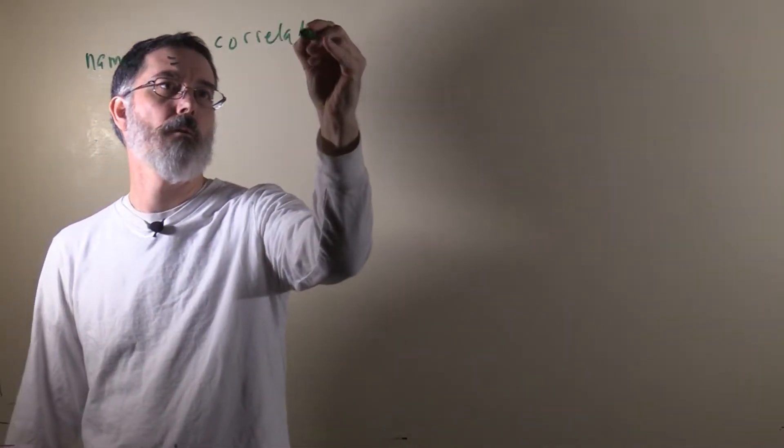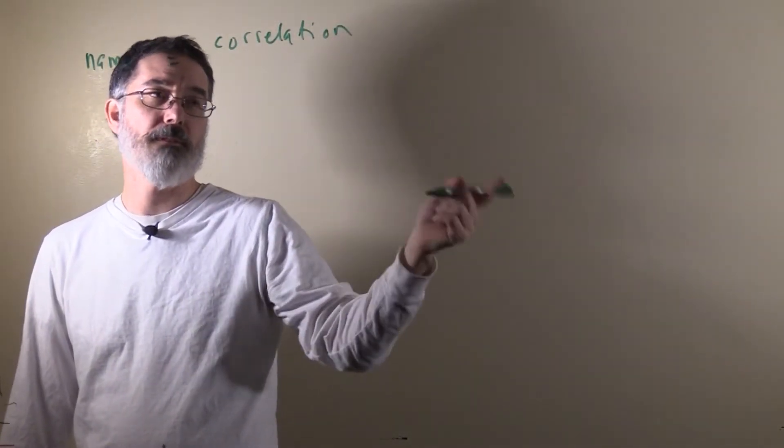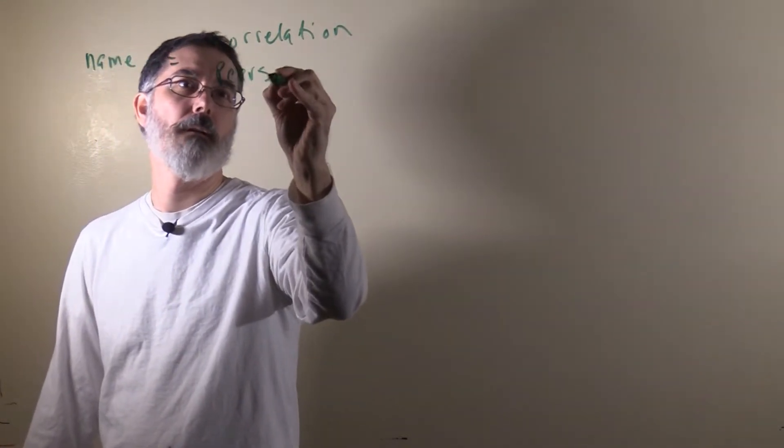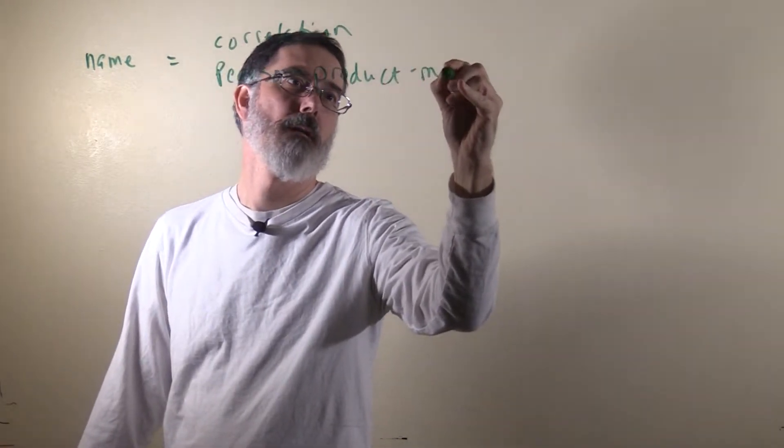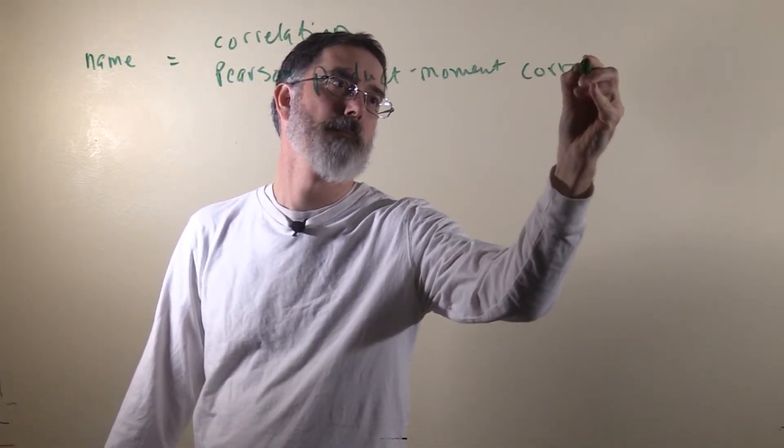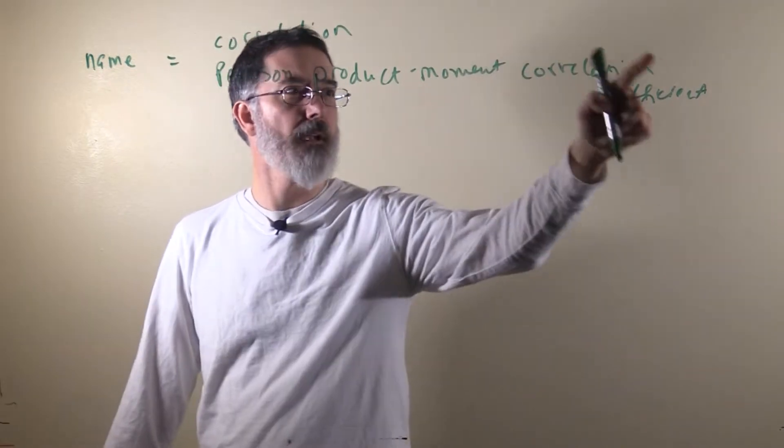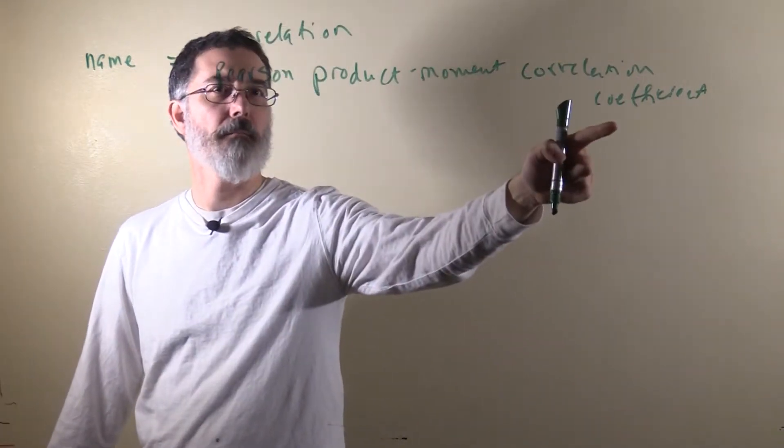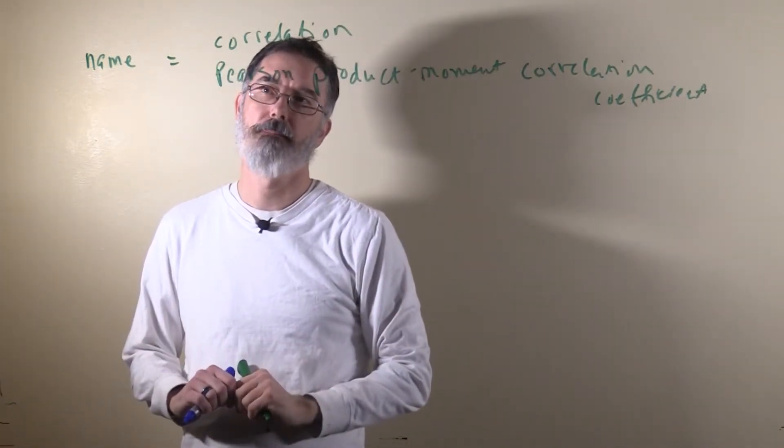We will talk about correlations next. The name of this test is a correlation. More precisely, we are going to talk about the Pearson product moment correlation coefficient. But this is the kind of correlation that people usually mean when they say the word correlation. So we are doing the regular correlation next.